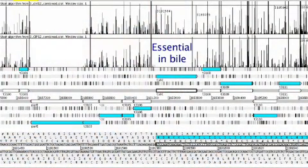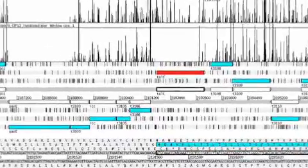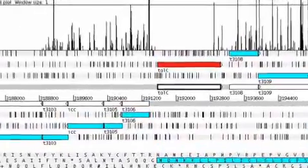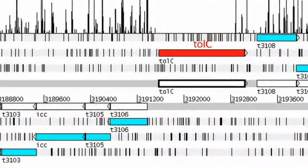There are 170 genes which are likely to be involved in bile tolerance in Salmonella typhi. 30 of these previously are of unknown function.